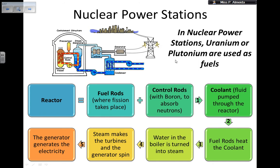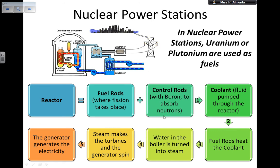In nuclear power stations, the fuel used is going to be plutonium or uranium. In a nuclear power station, I have the reactor — that's the place where I have the fuel. And then I would use this fuel. The reactor is made of two things: fuel rods, where the fission takes place, and control rods, which are made of boron and absorb neutrons.